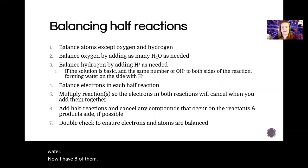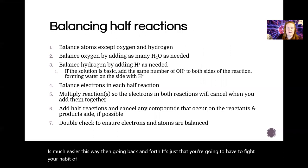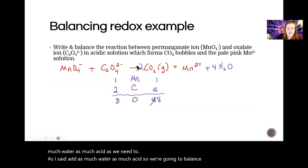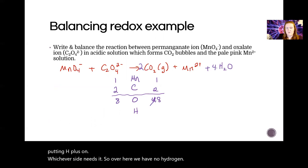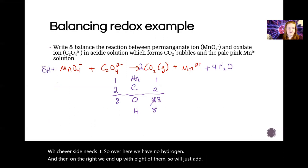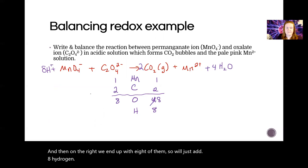It's much easier this way than going back and forth. It's just that you're going to have to fight your habit of wanting H and O to balance right away. You have to realize we can add as much water and as much acid as we need to. The next step, as I said, add as much water and as much acid. So we're going to balance the hydrogen by putting H+ on whichever side needs it. So over here we have no hydrogen, and then on the right we end up with eight of them. So we'll just add a hydrogen with a plus.